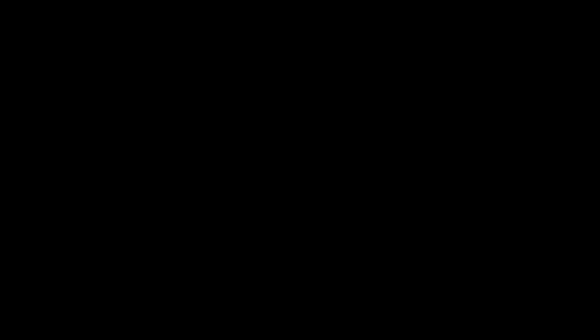These last few sessions, we've looked at setting up the dividend policy judgment — the dividend principle. In this session, I'd like to talk about ways in which you can look at a company and say, should this company be returning more in cash or less in cash? I'm going to call this the cash trust nexus, and you're going to see in a moment why I introduce the word trust into this discussion.